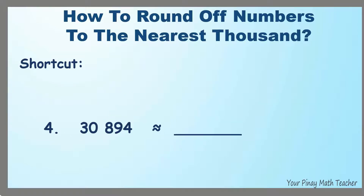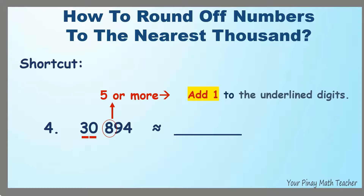Number 4: 30,894. Underline the thousands digit and the digit to its left. Then look at the digit to its right — it's 8. If it is 5 or more, add 1 to the underlined digits. Since 8 is more than 5, add 1 to 30; 30 becomes 31, and 8, 9, and 4 become 0s. So, 30,894 is nearest to 31,000.